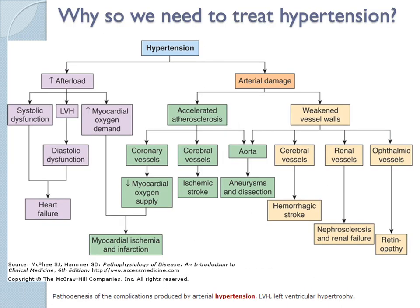Why do we need to treat hypertension? It causes a lot of long-term and also irreversible damaging effects — not just towards the heart, but also stroke, both ischaemic and haemorrhagic, retinopathy from high pressure on weakened small vessel walls in the eye and kidney, and the brain. All this in combination is what we try to prevent, because it reduces the mobility of the patient tremendously.